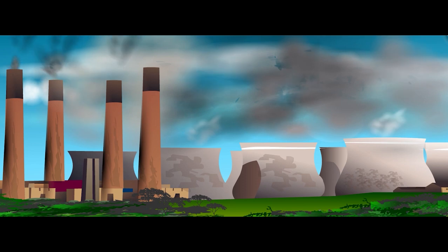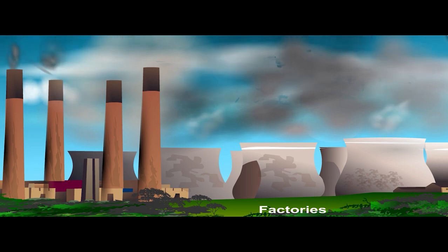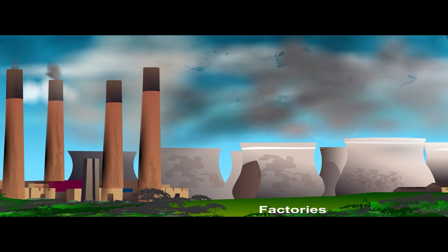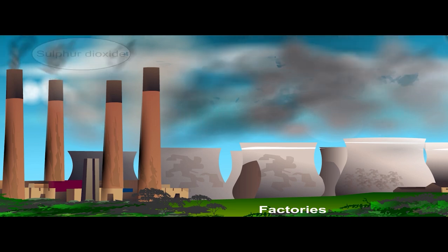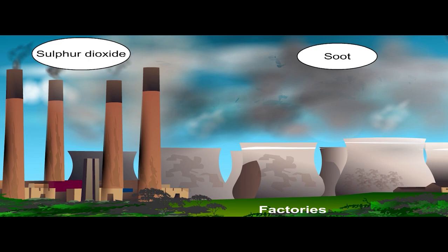Factories are another main contributor of air pollution. Factories are largely found in industrial and urban areas. The examples of air pollutants that factories produce are sulfur dioxide and soot.